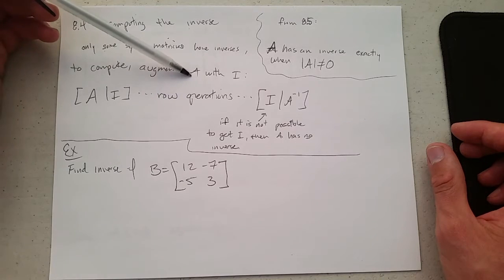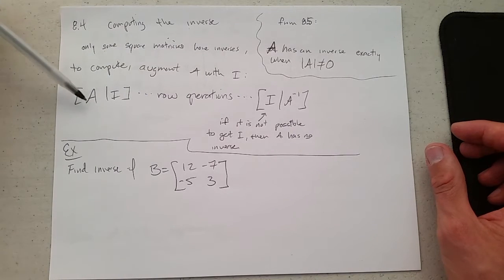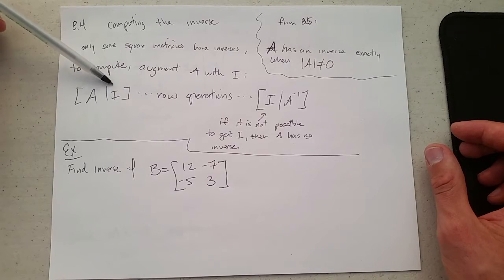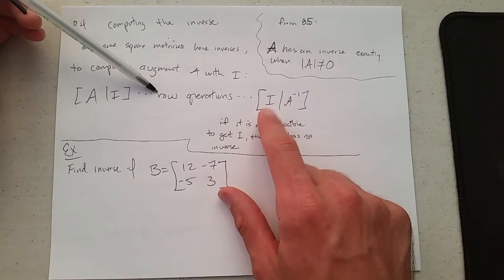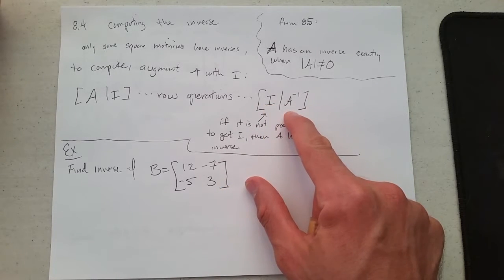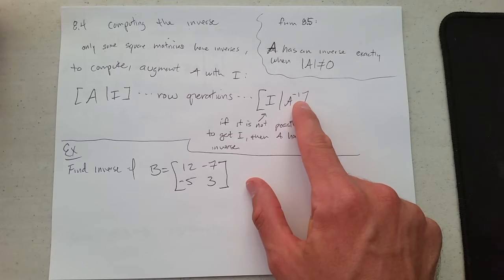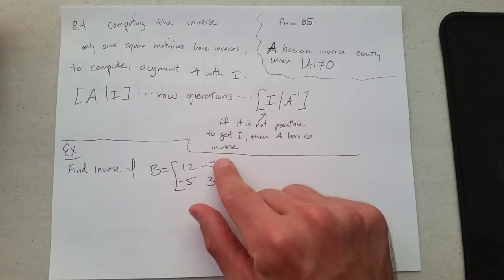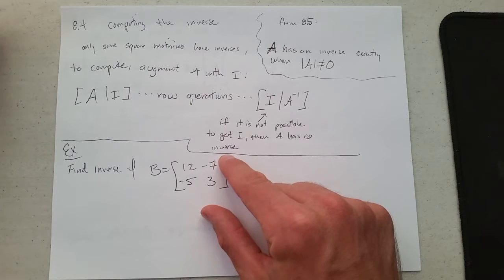We're going to augment the matrix A with the identity. So we're going to write the matrix A as the first few columns, and then whatever dimension A is, we're going to put the identity matrix of the same dimension. We're going to do row operations so we get the identity matrix here, which is a row reduced echelon form matrix, and everything left over is A inverse. If you can't get the identity here, most likely matrix A does not have an inverse.